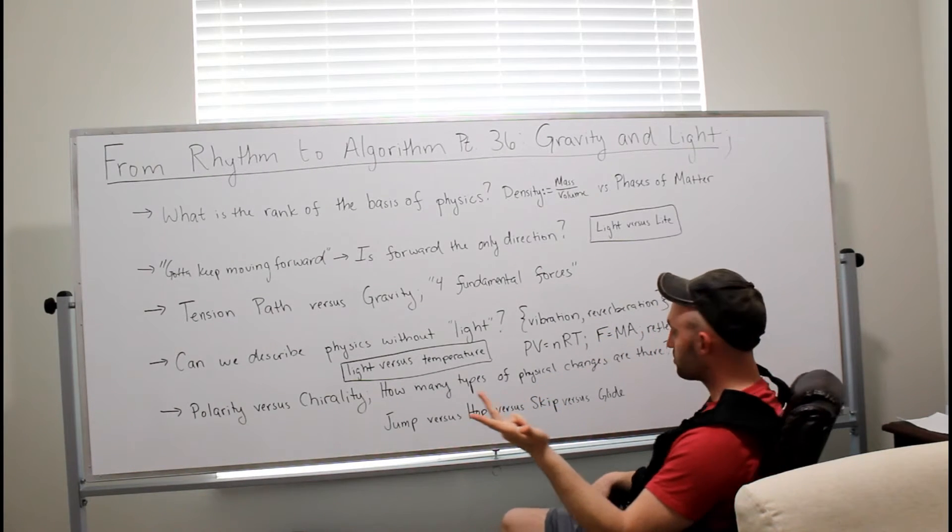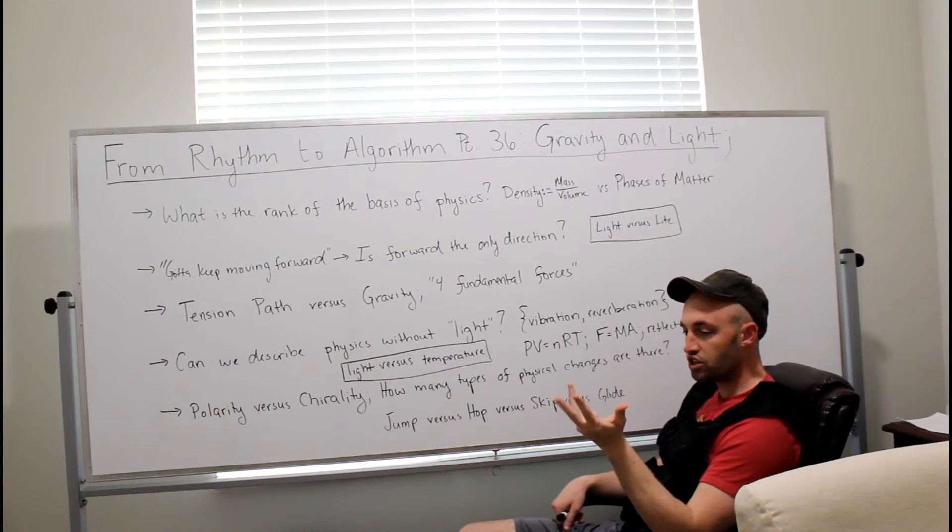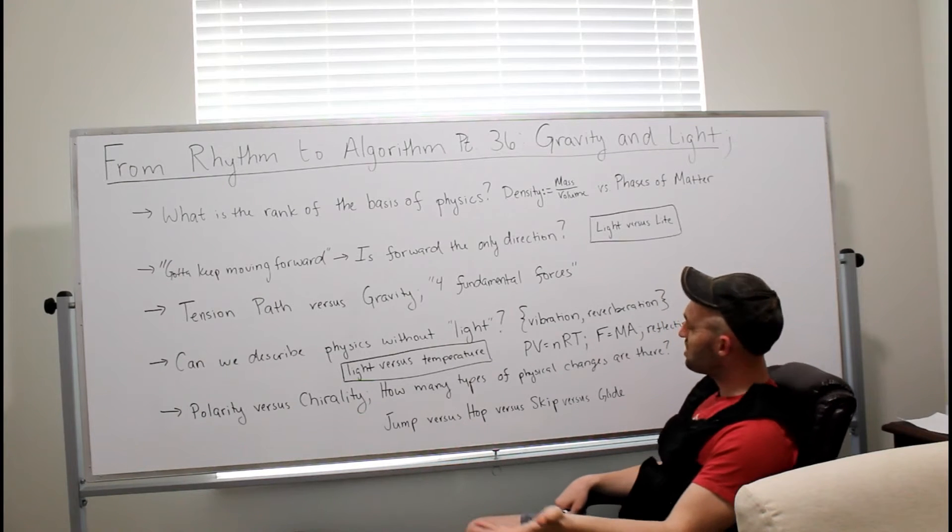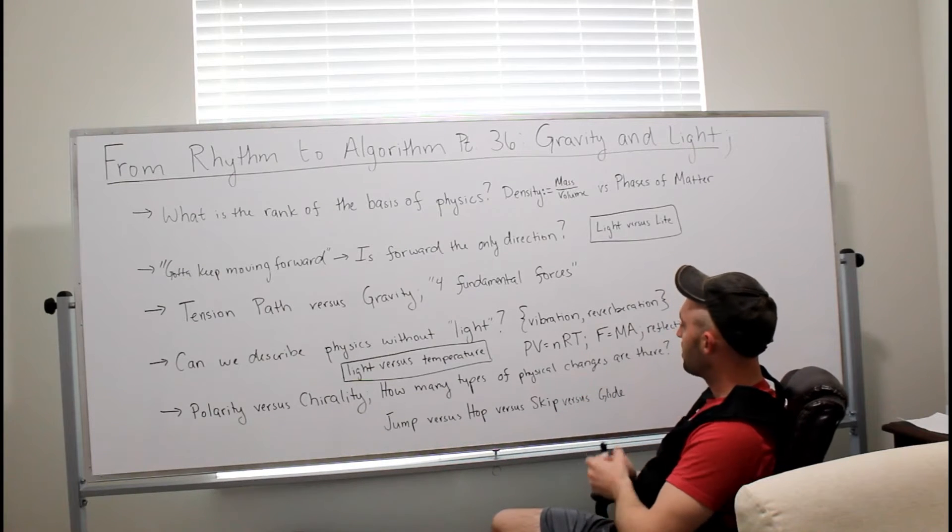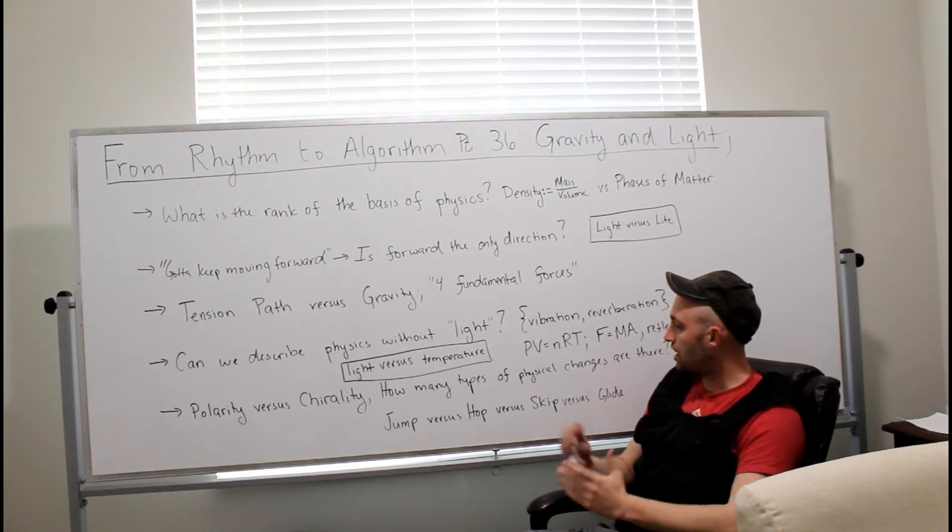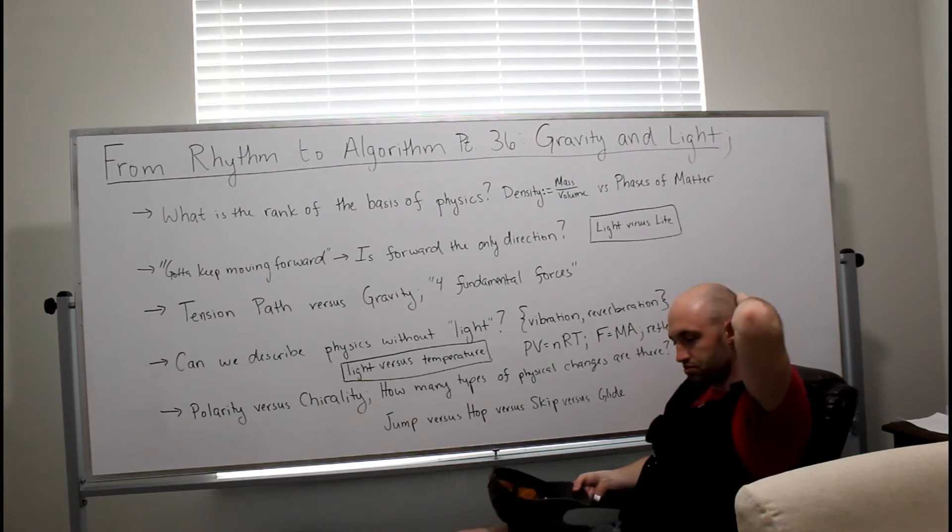So vibration, three syllables. We've been talking about syllability a lot. Reverberation, five syllables. So are even numbers numbers? Do we need even stuff? Again, where do prime numbers exactly come into play? Not exactly sure.